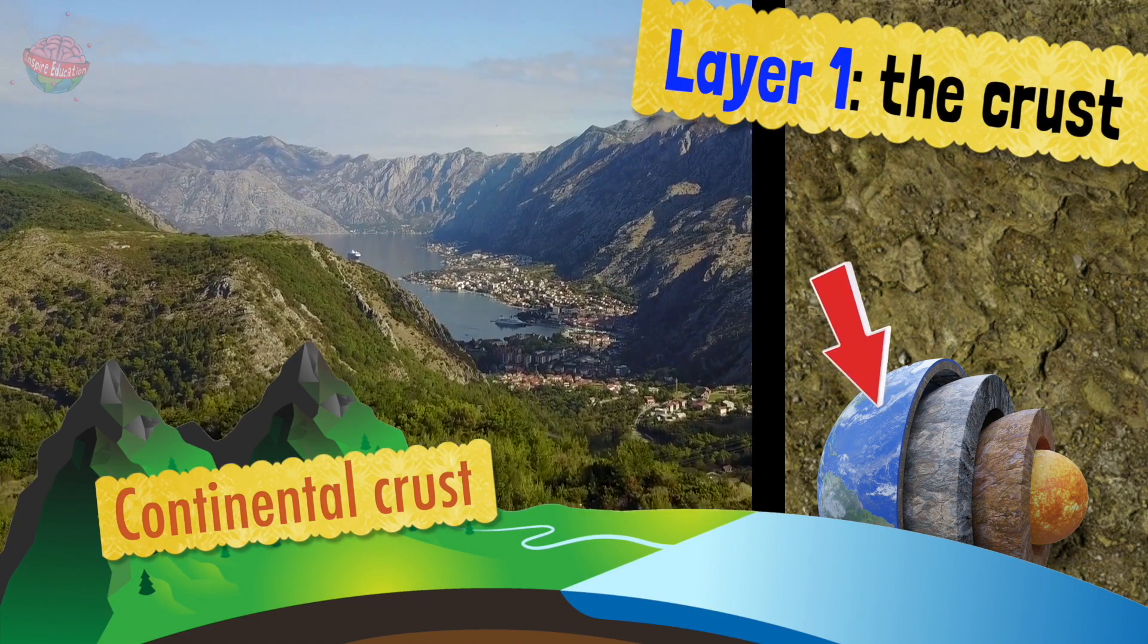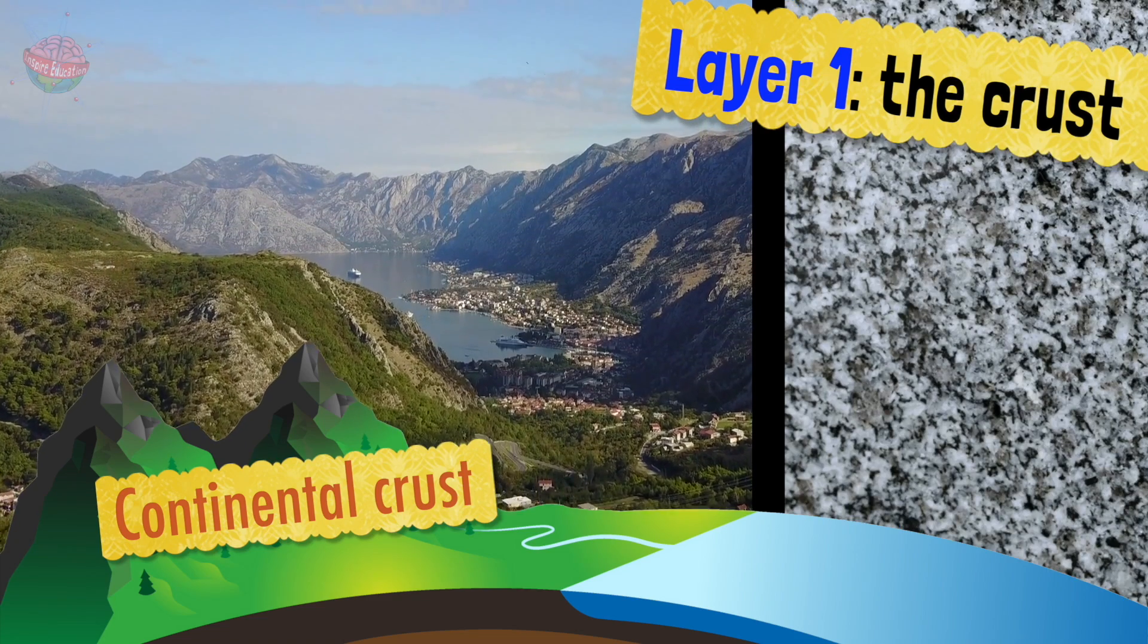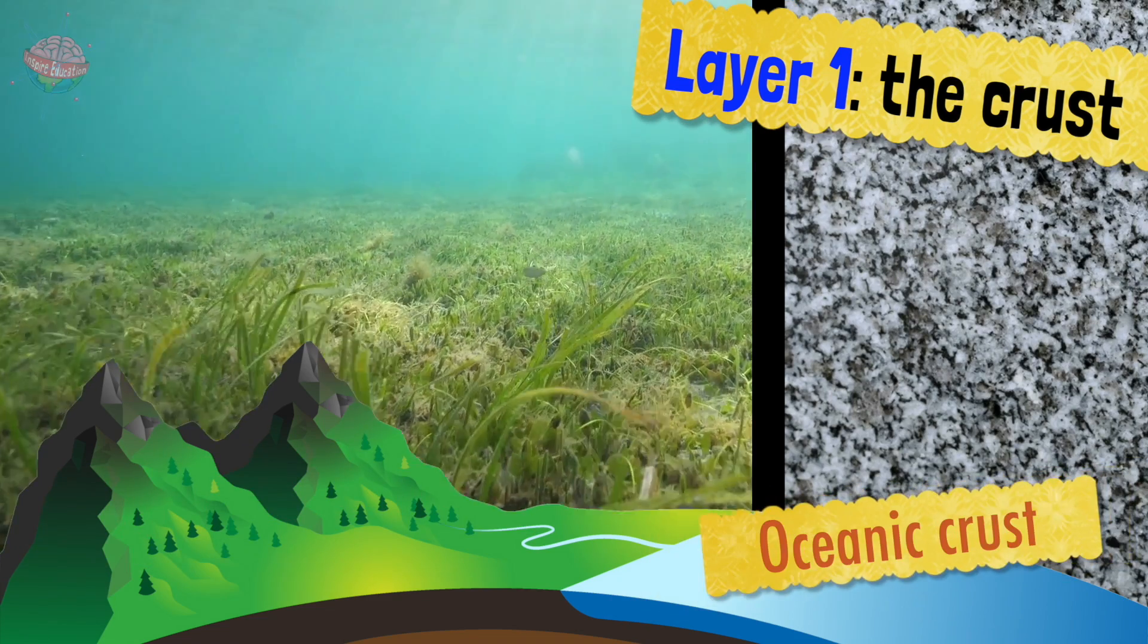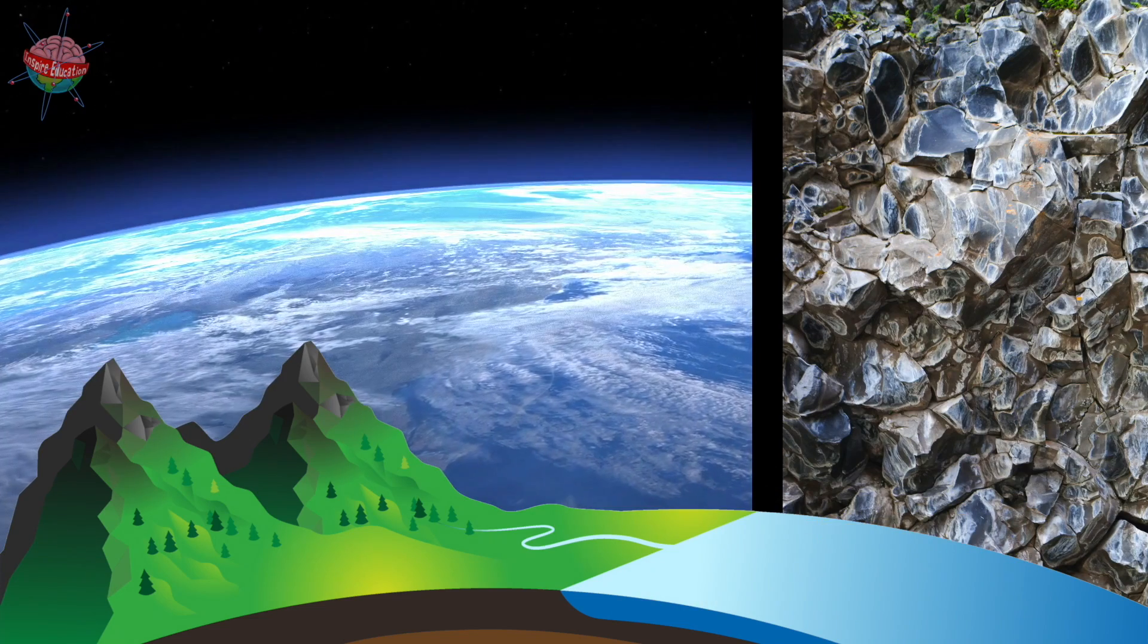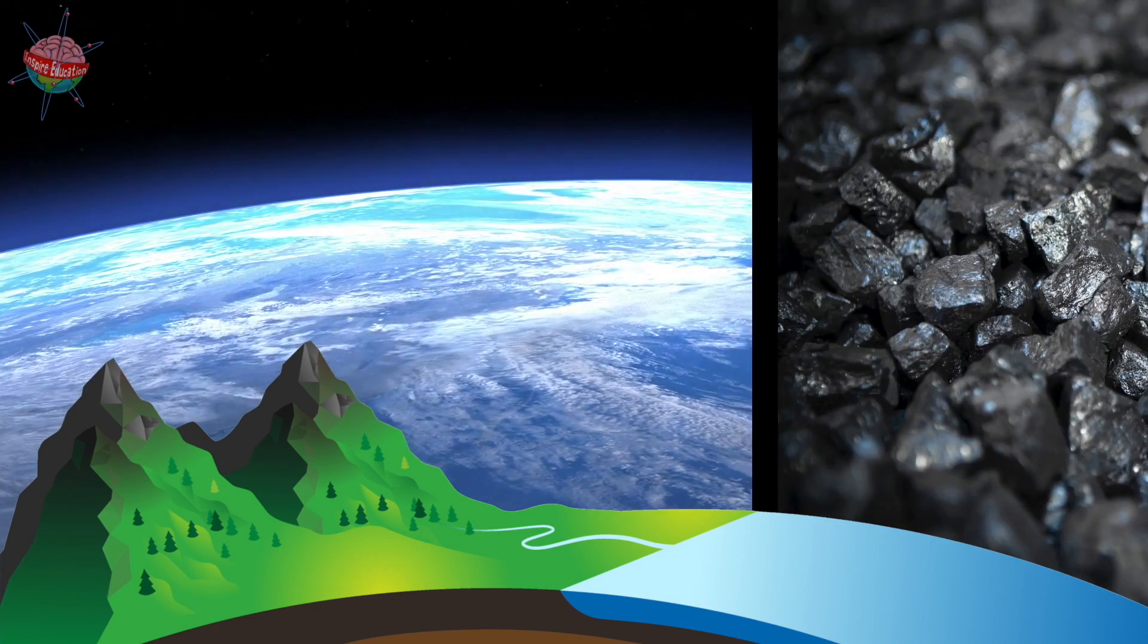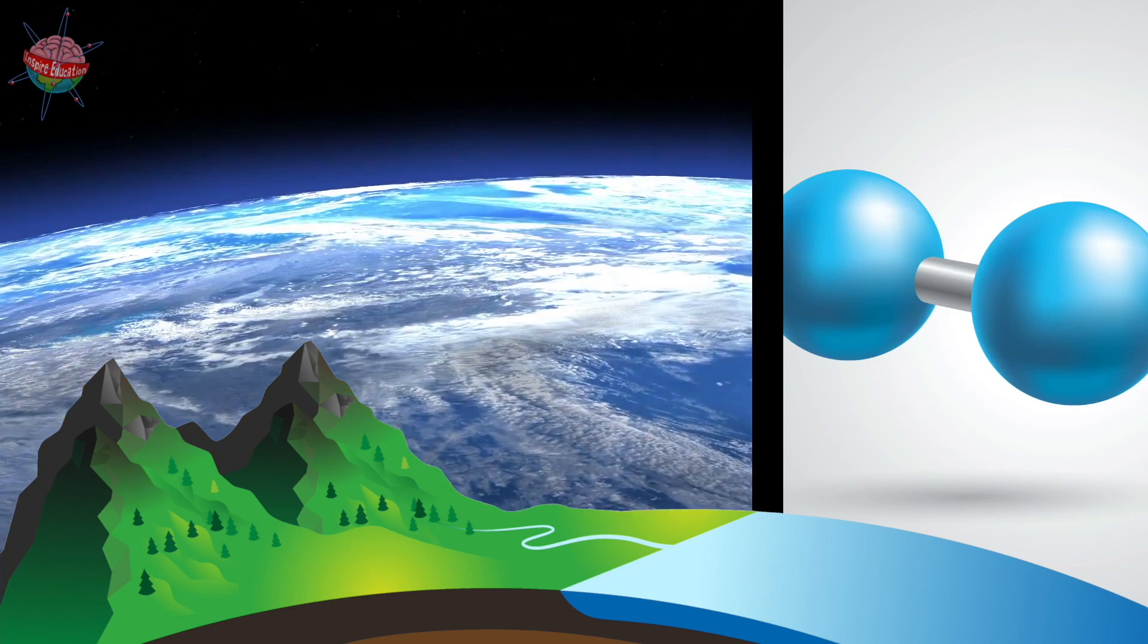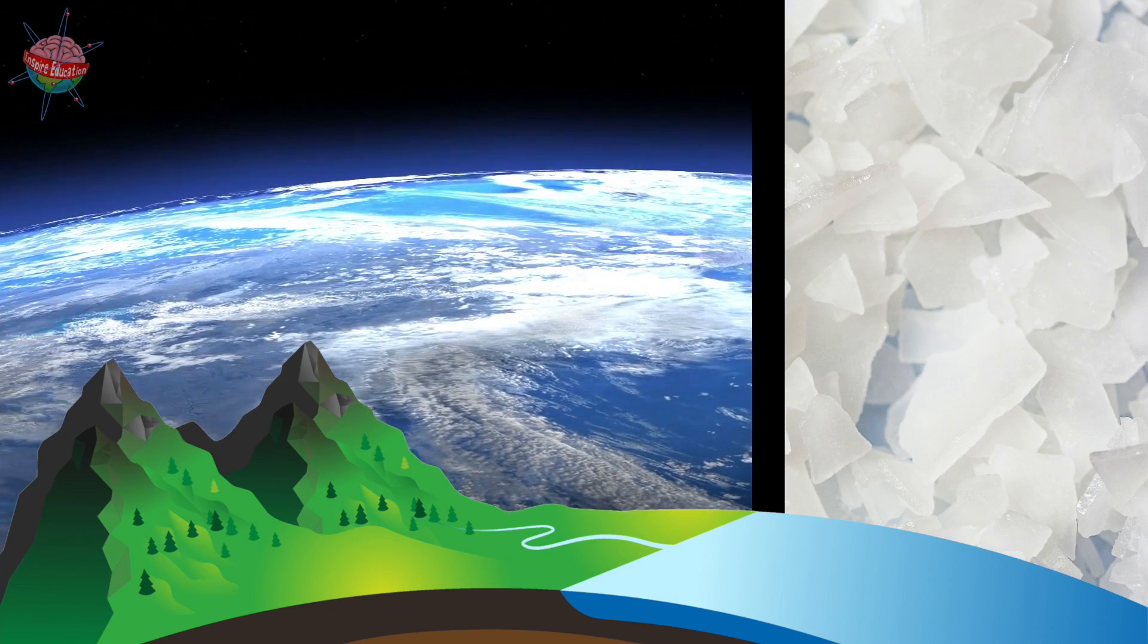The continental crust is mostly made of granite, while the oceanic crust is mostly basalt. The main elements that make up the crust are iron, oxygen, magnesium and aluminium.